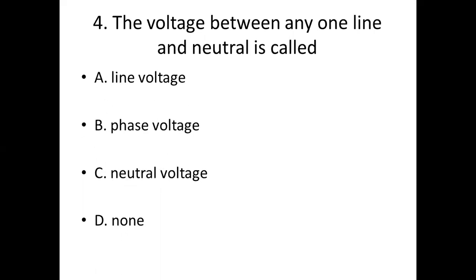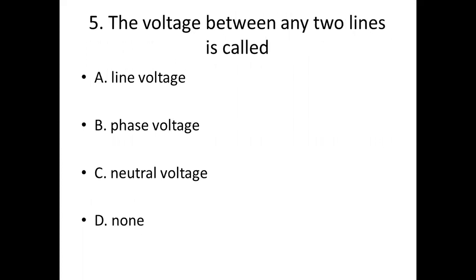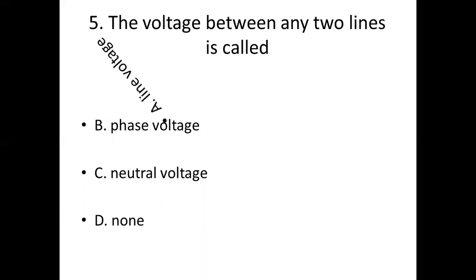Fifth bit. The voltage between any two lines is called. Option A: Line voltage. Option B: Phase voltage. Answer: Option A. Line voltage.